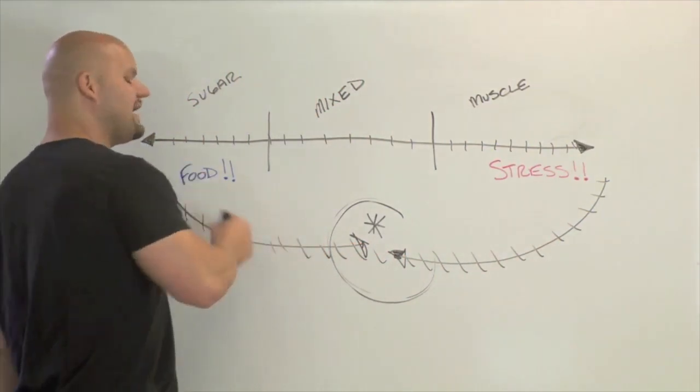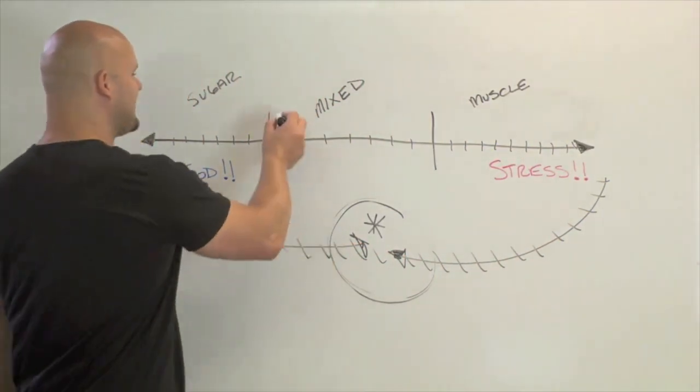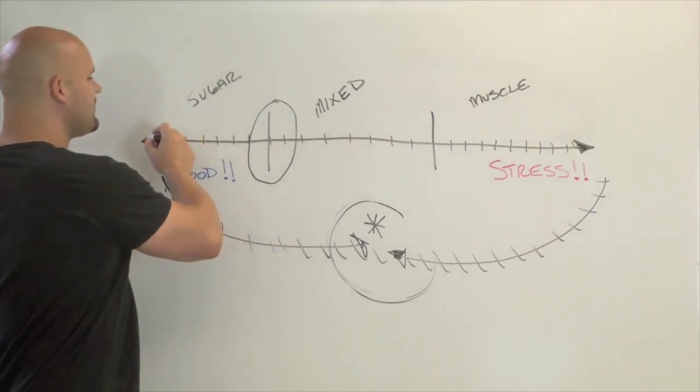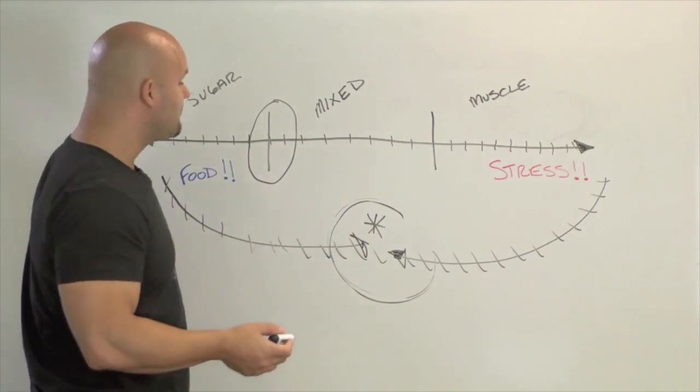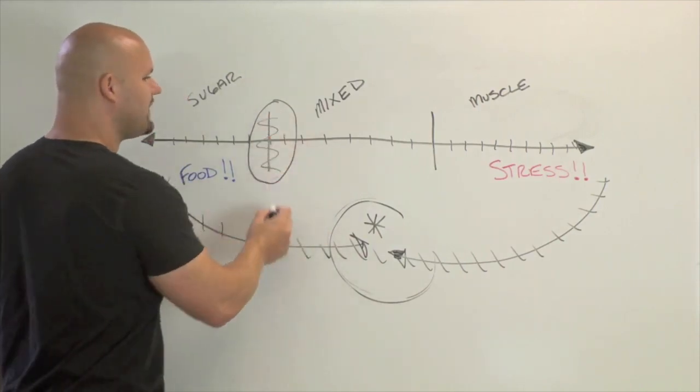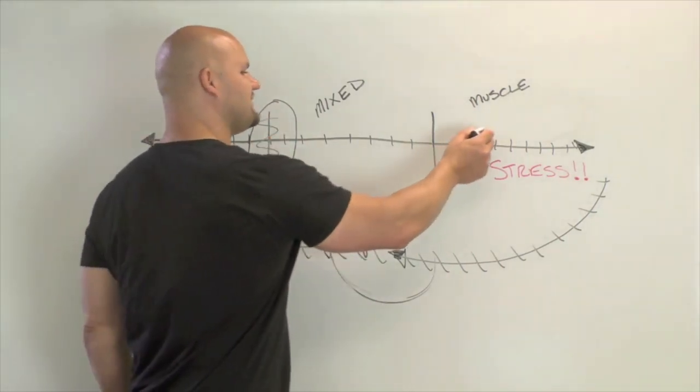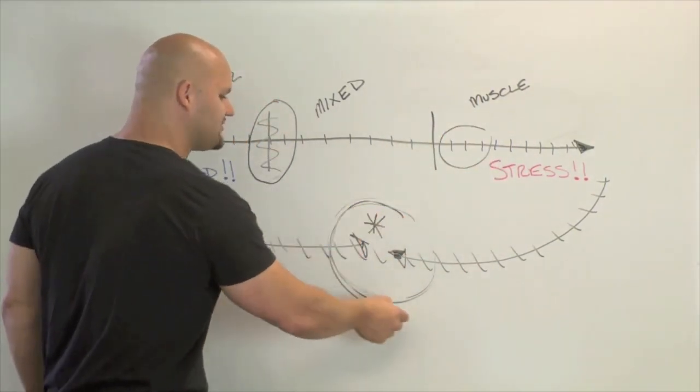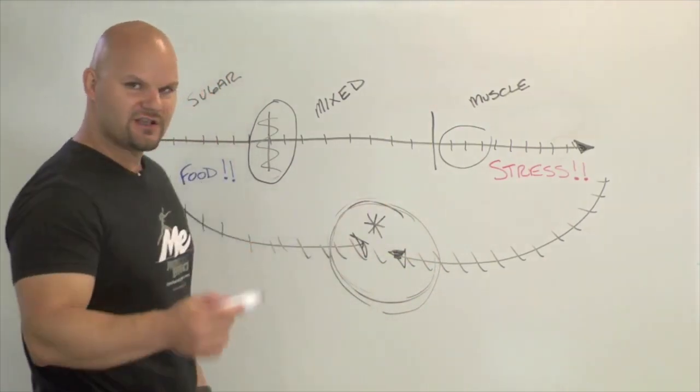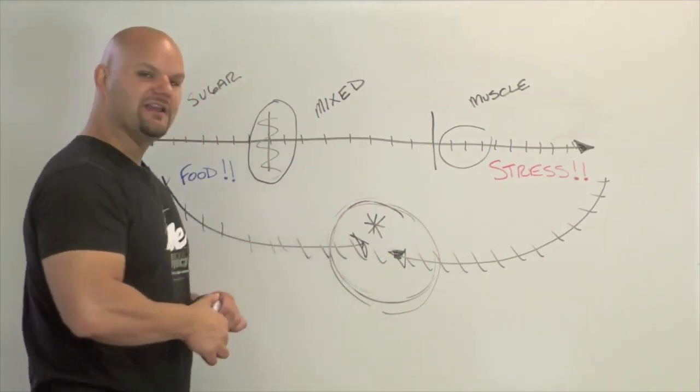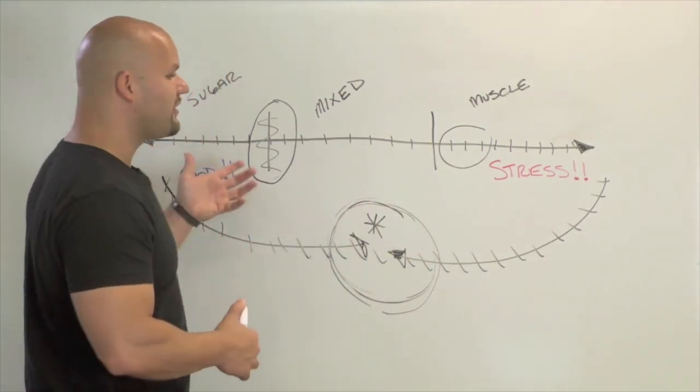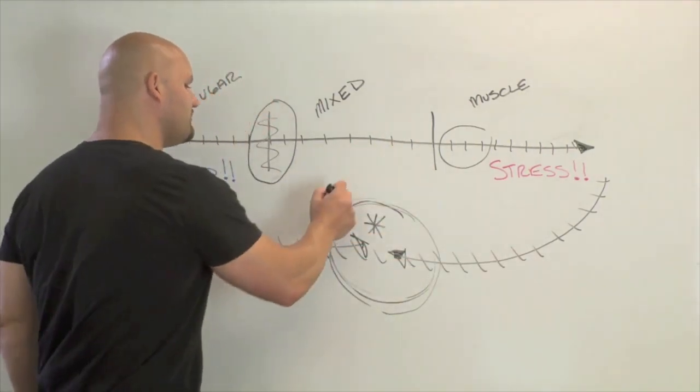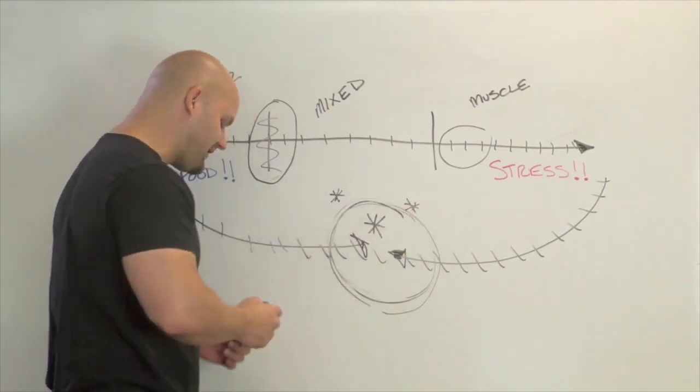For instance, I am sort of on this end of the spectrum. I store fat easily, I put on muscle easily, but I'm not sort of the typical sugar burner. So I fall in this area. You may find that you're a stress individual and you fall maybe in this area. Some of you may completely relate to the fact that when I took that questionnaire, if you're someone who took that questionnaire and you resemble a sugar burner but you came out scoring as a muscle burner, then you can almost be sure that you fall right in this category.